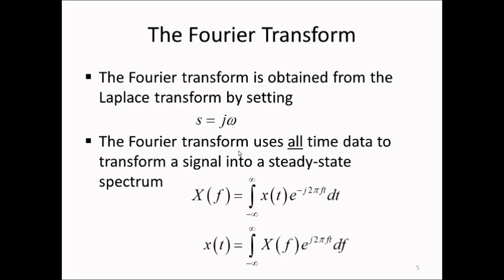Now we will go through the Fourier transform in some detail. The Fourier transform comes out of the Laplace transform such that if we have a Laplace transform expression, we replace s, the Laplace operator, by jω, where ω equals j times 2π times the frequency in Hertz.